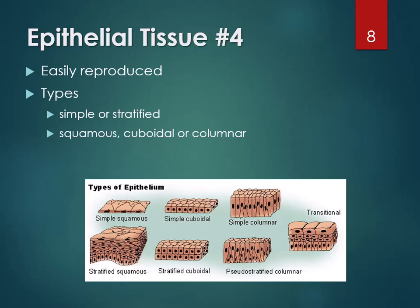Epithelial tissue is categorized by how many layers it has. If it's one layer thick, it's called simple epithelial tissue. If it's more than one layer, it's stratified. The second way to group it is by cell shape: squamous, cuboidal, or columnar. So you have simple squamous, simple cuboidal, and simple columnar — one layer thick of cells that are tile-shaped, cube-shaped, or column-shaped respectively.